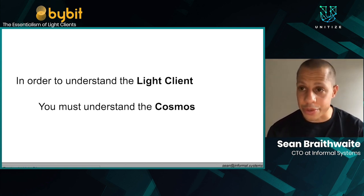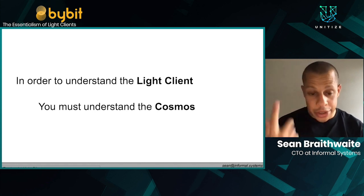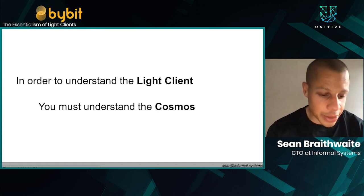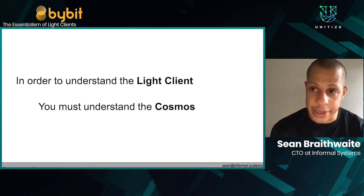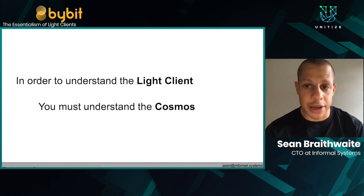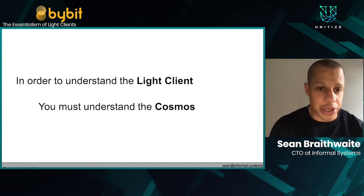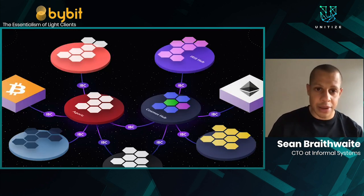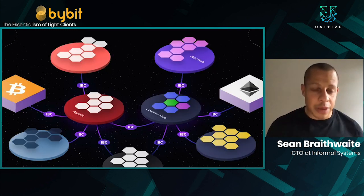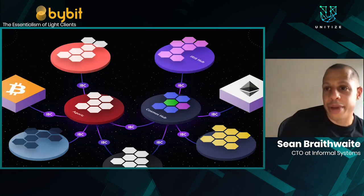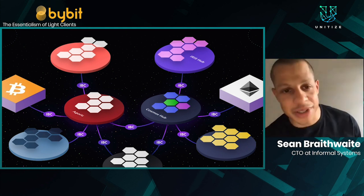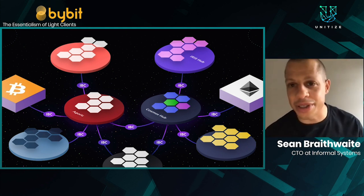Cosmos was planned to be the internet of blockchains, to provide sovereignty and interop between finite state machines. Maybe a picture is the best way to look at it. You can imagine that there are not one, but many blockchains, because that's actually what the world is, and that's actually what's in the picture.